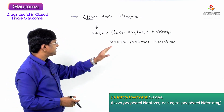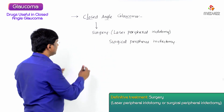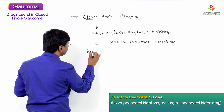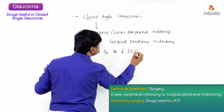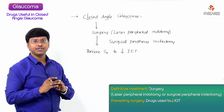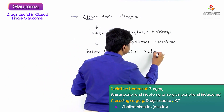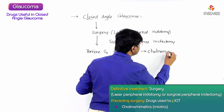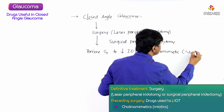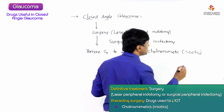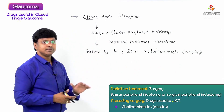Just before the surgery, the intraocular tension should be reduced. Before surgery, to reduce intraocular tension, we use cholinomimetic drugs, which are miotics. By causing miosis, the aqueous outflow will be increased.